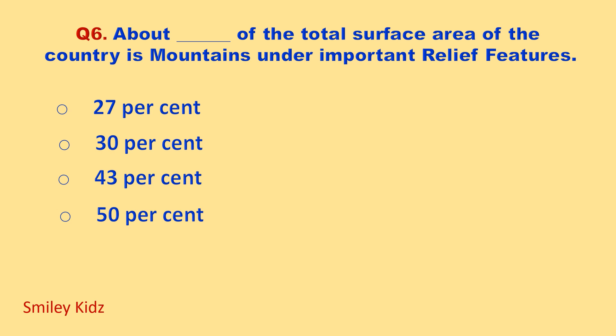About what percentage of the total surface area of the country is mountains, under important relief features? Your options are: 27 percent, 30 percent, 43 percent, 50 percent. Your time starts now.